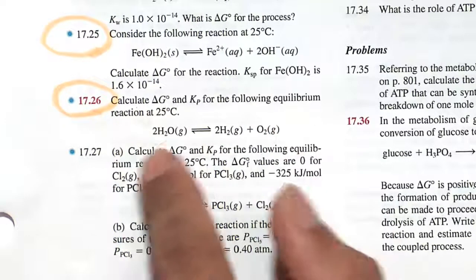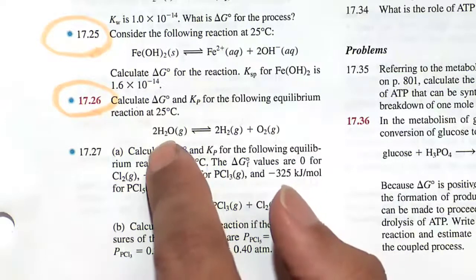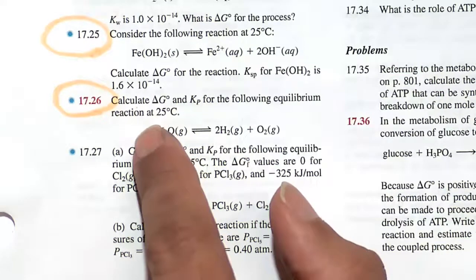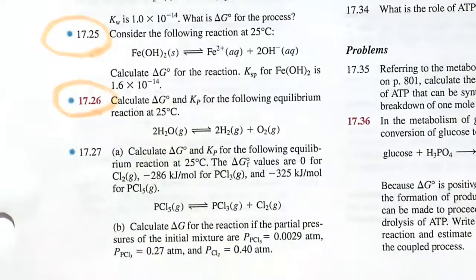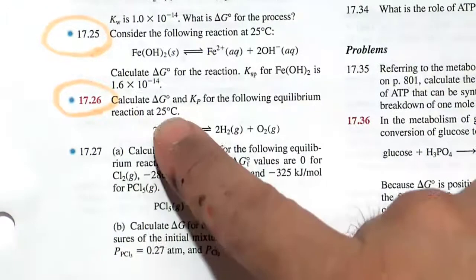Let's utilize the back-of-the-book values to get our delta G free energy change for this reaction at standard state, 25 degrees C, and one atmosphere of pressure. We'll look it up in the back of the book.